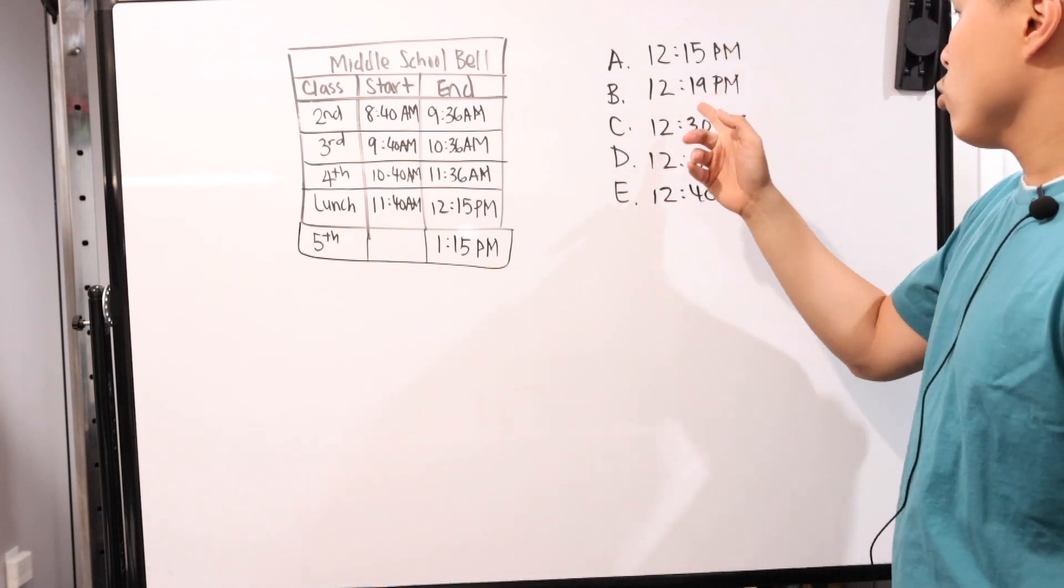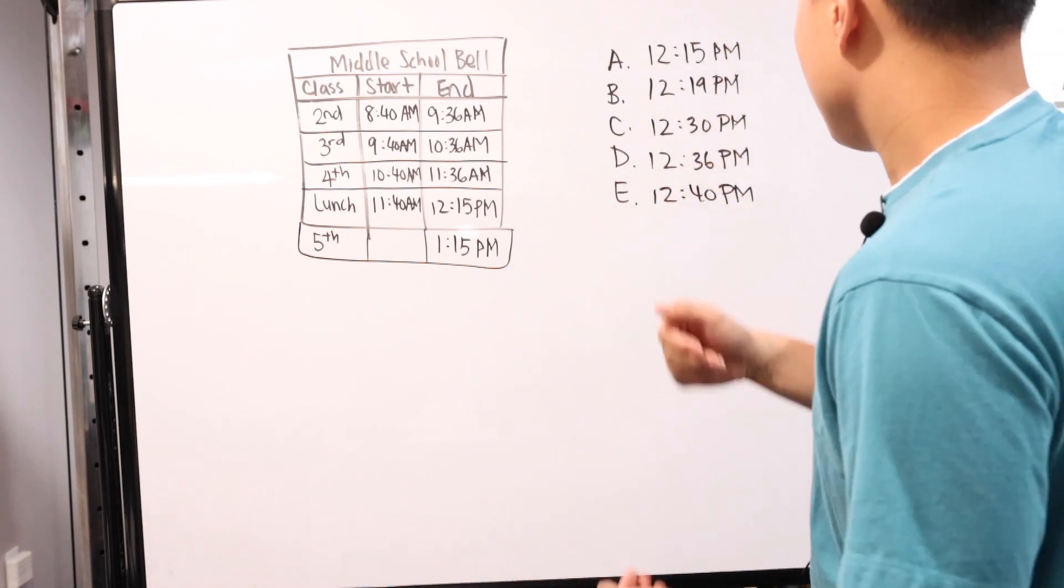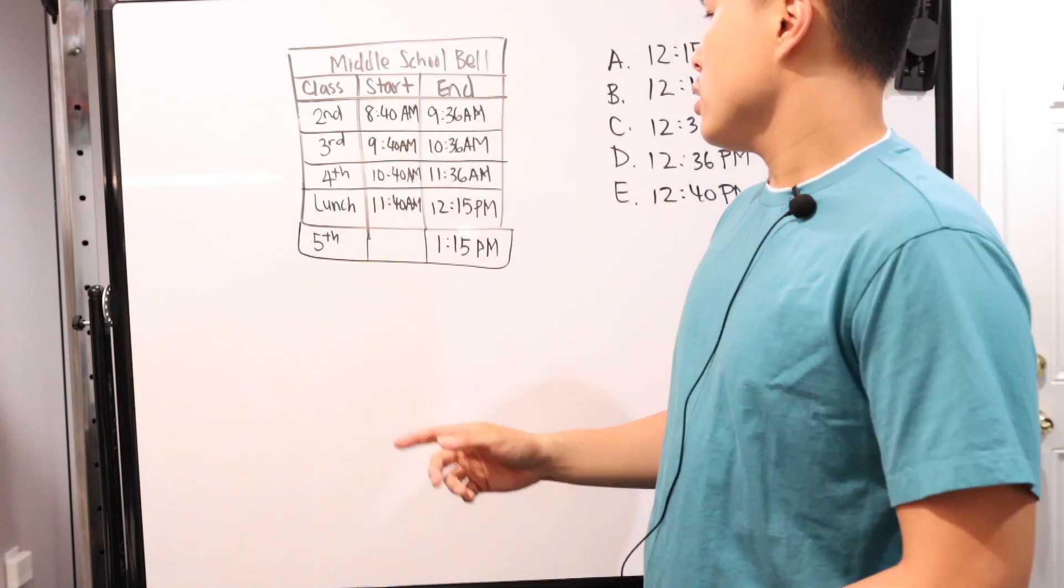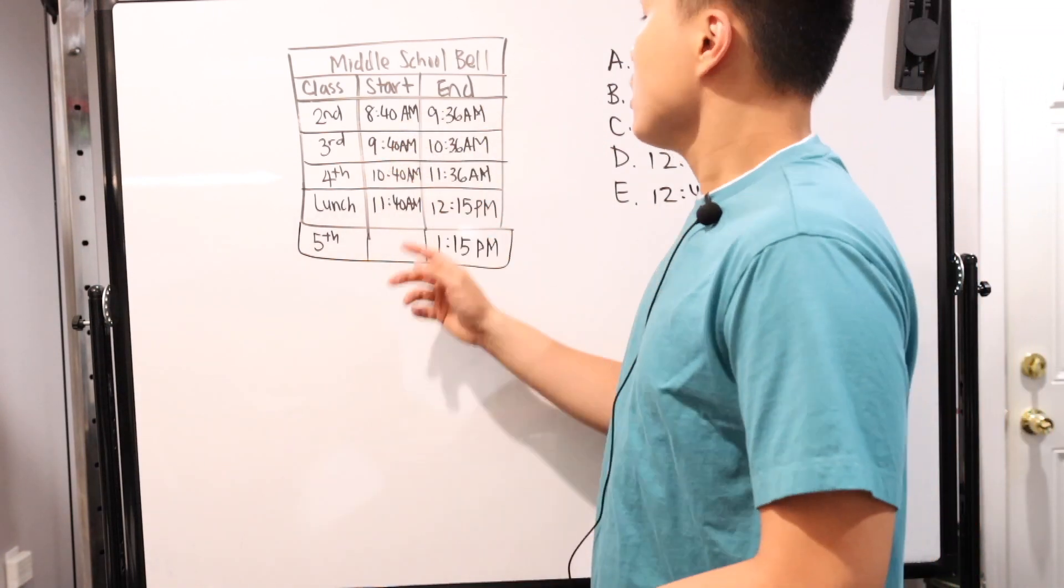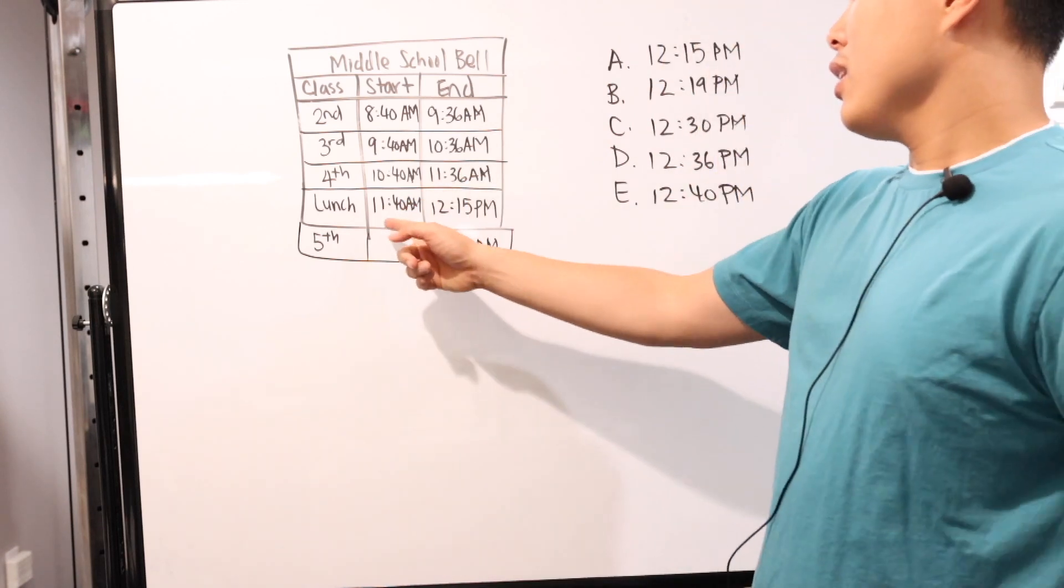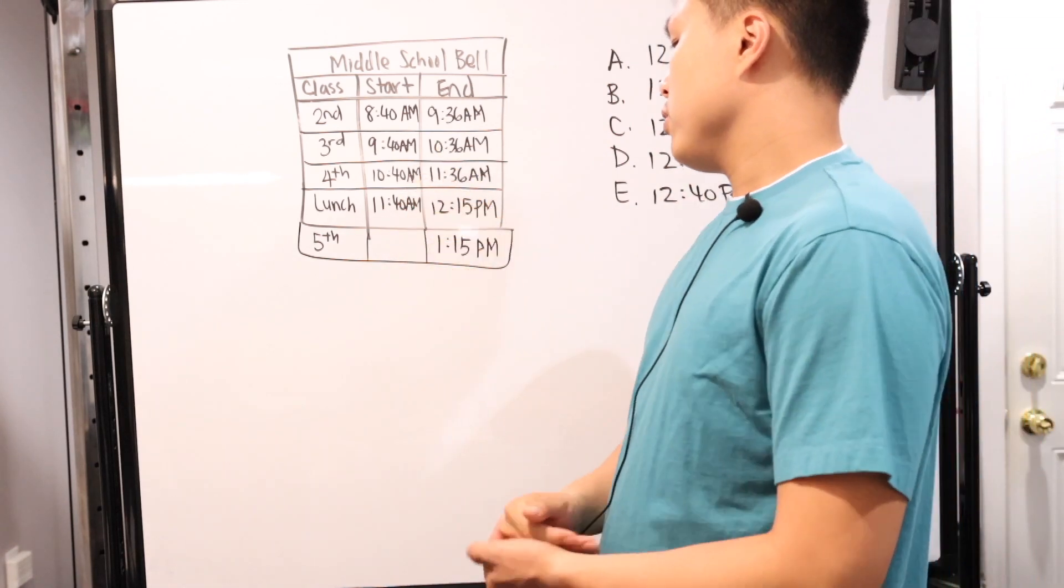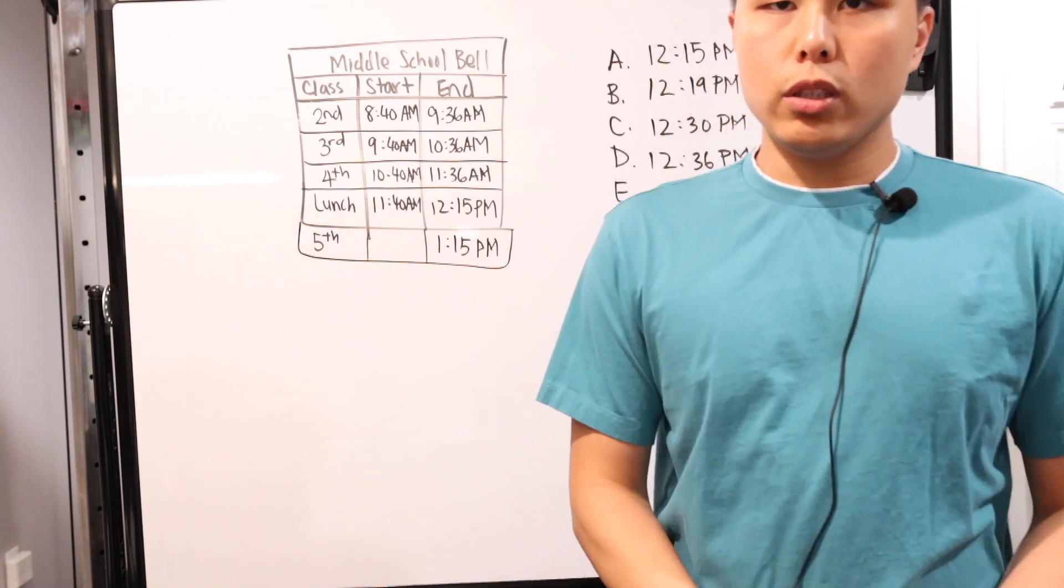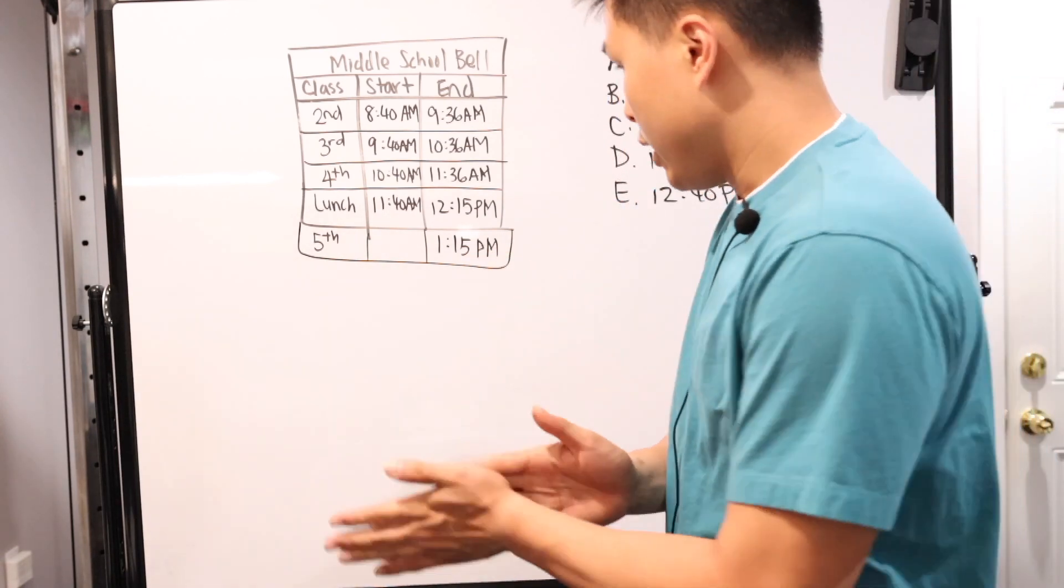If you guys can't see it, 12:15, 12:19, 12:30, 12:36, and 12:40. Here we have 8:40, 9:36, and then 9:40, 10:36, 10:40, 11:36. Then at lunchtime is 11:40, 12:15. There's a missing some time slot. And then we have our 1 to 1:15 basically.